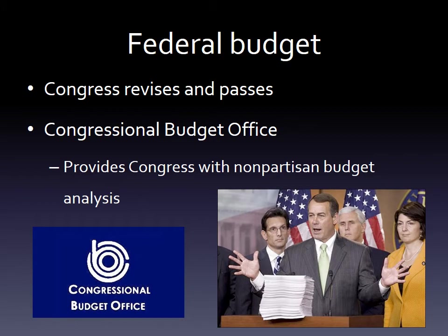Congress has something called the CBO. Whereas the president proposes the budget, the CBO is the agency that works for Congress. They provide Congress with nonpartisan budget analysis. The OMB also does nonpartisan budget analysis, but the key thing is one advises the president and the other advises Congress. The CBO being nonpartisan means it's not politically biased — it's made up of economists who say: if we do this tax cut or increase, or spend money here or not there, this is the effect it will have on the economy. They do calculations and report what will happen as a result of the president's budget or a counterproposal by Congress.